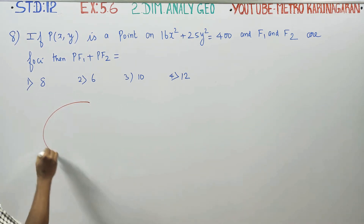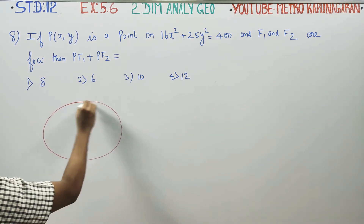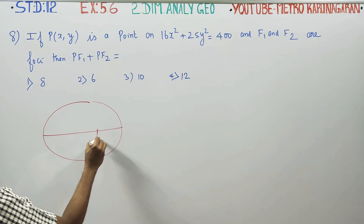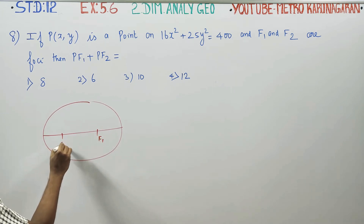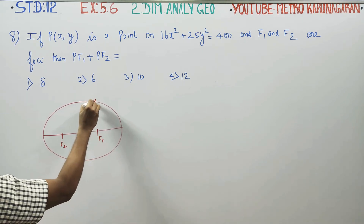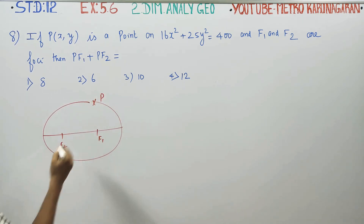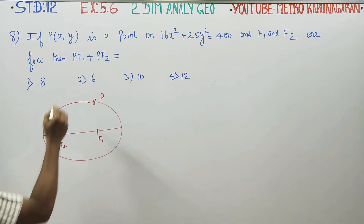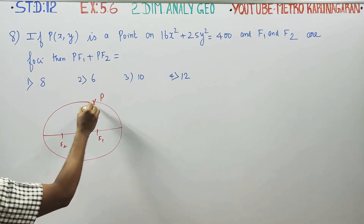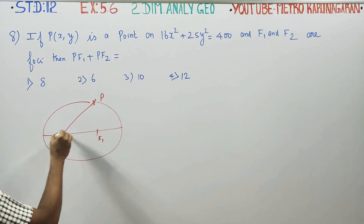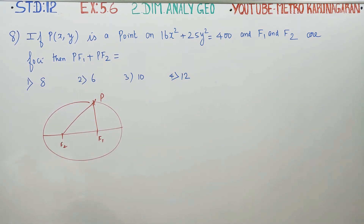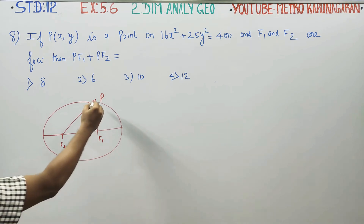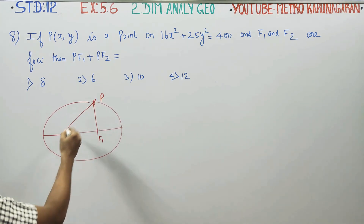We have one ellipse with two foci, F1 and F2. P is any point on the ellipse. The question asks: what is the length of PF1 + PF2?